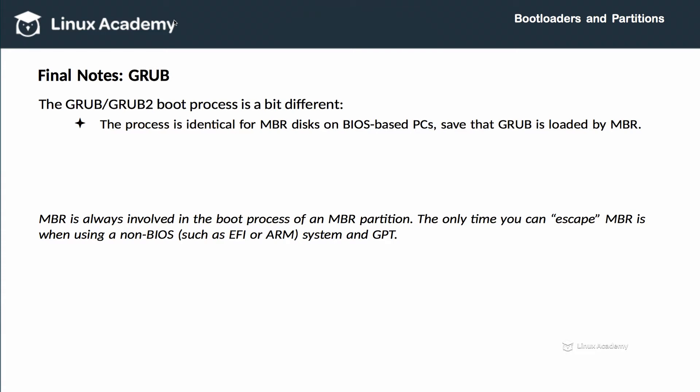That's why it's a good idea to use disk labels or UUIDs in /etc/fstab. Regarding Grub: the boot process for Grub is identical to MBR, but it's also a bit different in that Grub is actually called by MBR — that's how Grub is executed. Part of MBR's job is to load the Grub boot code, which means MBR is always involved in the boot process of an MBR-partitioned drive across the board.